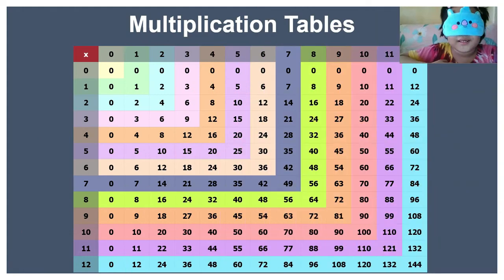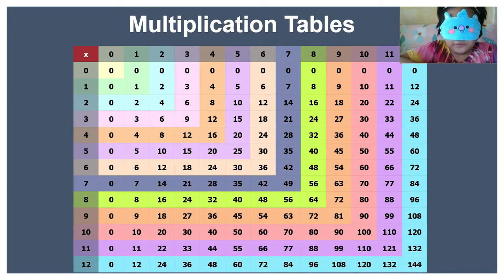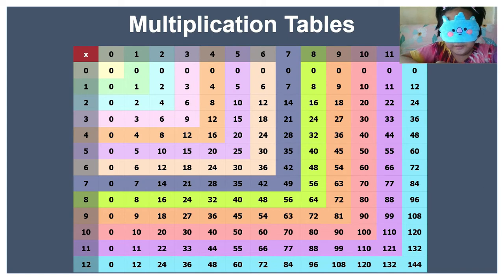3 times 1 equals 3. 3 times 2 equals 6. 3 times 3 equals 9. 3 times 4 equals 12. 3 times 5 equals 15. 3 times 6 equals 18. 3 times 7 equals 21.